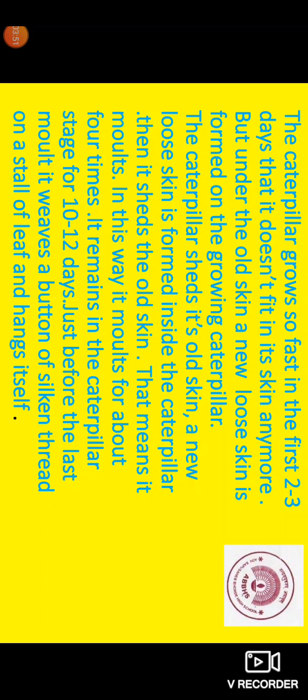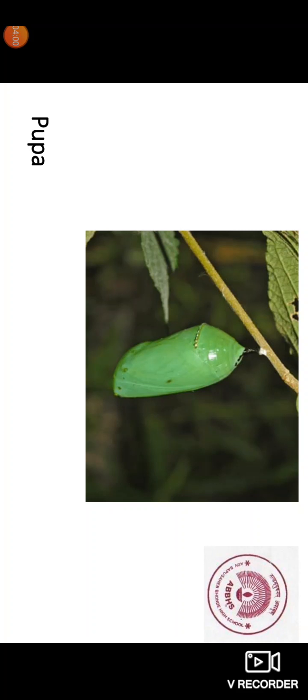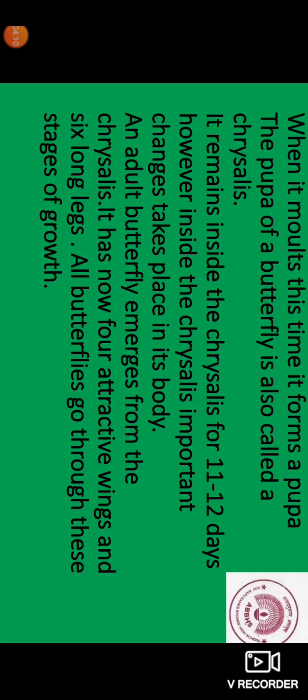It remains in the caterpillar stage for ten to twelve days. Just before the last molt, it weaves a button of silken thread on the stalk of a leaf and hangs itself. Here you can see the picture of a pupa. When it molts this time, it forms a pupa. The pupa of a butterfly is also called a chrysalis. It remains inside the chrysalis for eleven to twelve days. Inside the chrysalis, important changes take place in its body. An adult butterfly emerges from the chrysalis. It now has four attractive wings and six long legs. All butterflies go through these stages of growth.